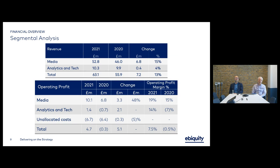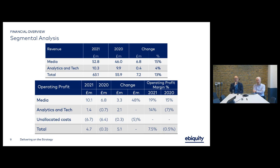Within the business we report media — the bulk of our business — and analytics and tech. The media business grew most strongly, particularly supported by digital media solutions contributing just under half of that growth. Media remains our higher margin area at 19%, up from 15% last year. Importantly, analytics and tech, which had been loss-making last year, came back into profit at 14% margin — better than two years prior to COVID — contributing to the overall margin of 7.5% and profit of £4.7 million.